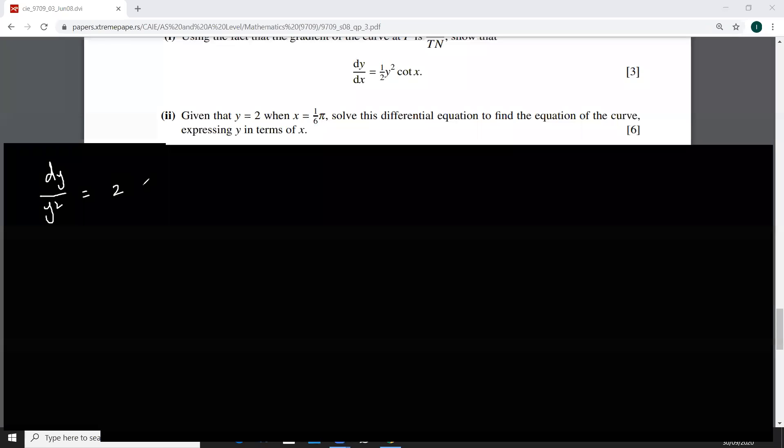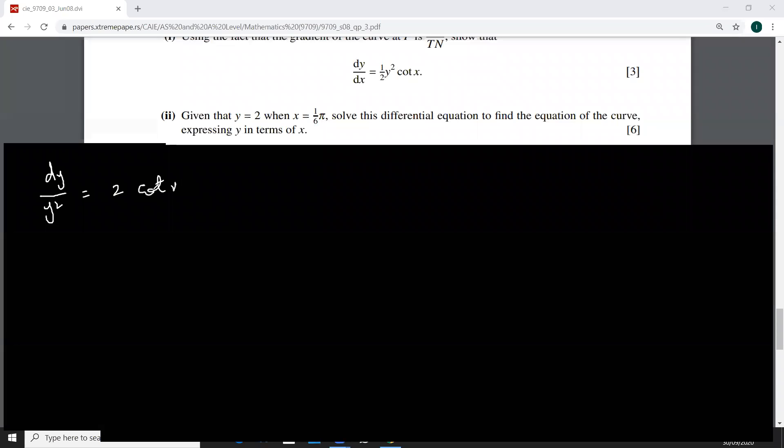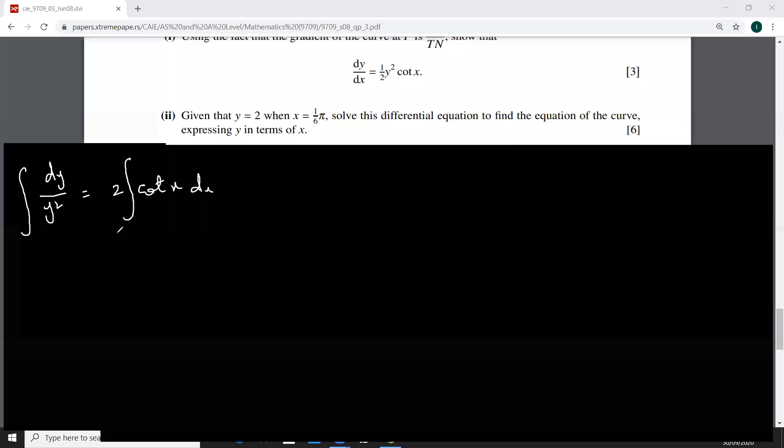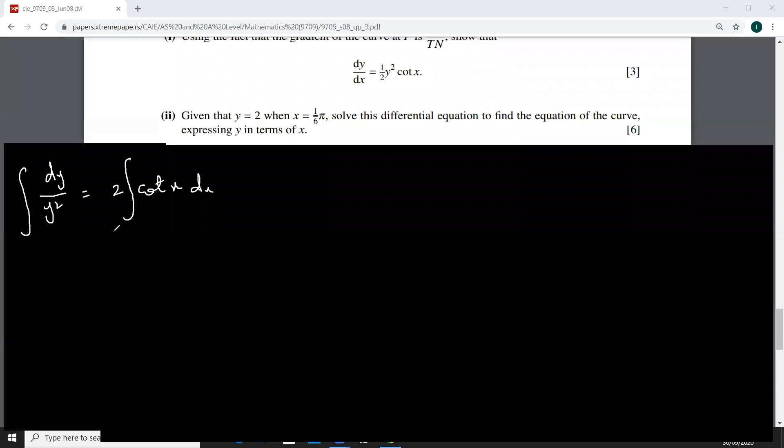So let's start. We have dy on one side and dx to go on the other side, so this will be dy over y squared and I have two cot x dx. How to integrate dy over y squared? You can move this to the numerator, so we shall move this to the numerator. This is one by two, and that is going to be one by two.